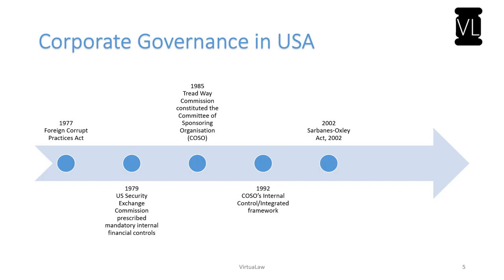In the year 2002, the Sarbanes-Oxley Act was enacted, named after its bill sponsors Sarbanes and Oxley. This act is intended to protect the shareholders and the general public from accounting errors and fraudulent practices in enterprises, and to improve the accuracy of corporate disclosures. 2002 is the year to remember because the Enron scam had happened in 2001, and there were many US scams during a similar period. Hence the Sarbanes-Oxley Act was primarily aimed at ensuring there would be no major scams like Enron in the near future.